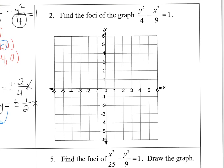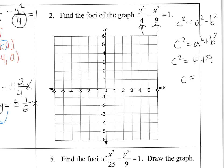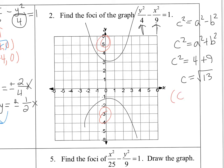For the next problem, find the foci. Recall that for an ellipse, c squared equals a squared minus b squared. For a hyperbola, it's c squared equals a squared plus b squared. So c squared equals 4 plus 9, giving c equals the square root of 13. Since y squared is positive, this hyperbola goes up and down, so the foci are on the y-axis at (0, √13) and (0, -√13).